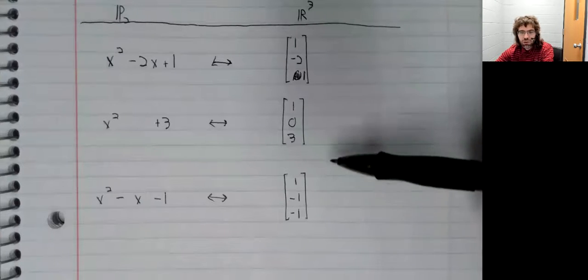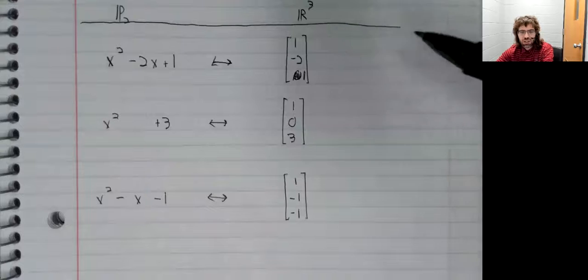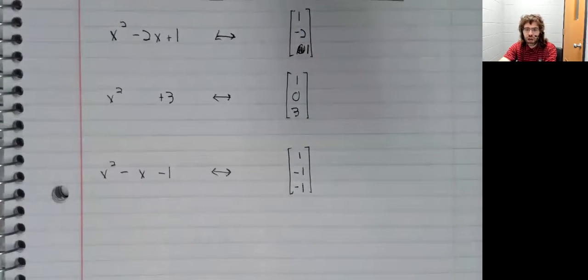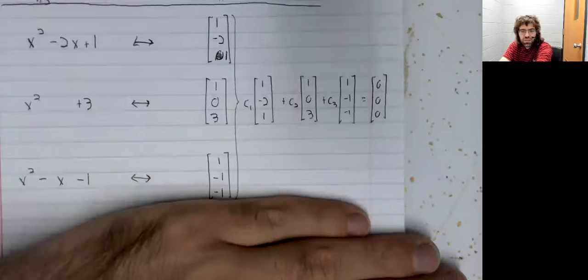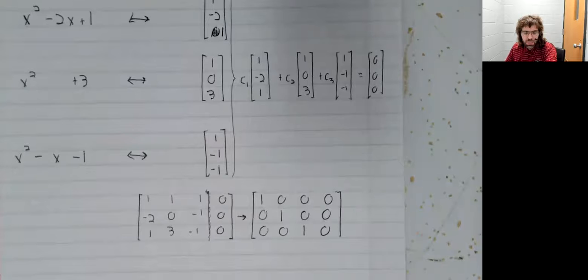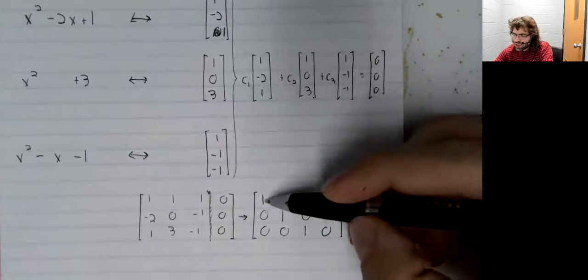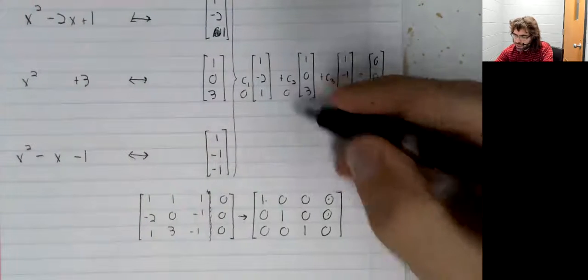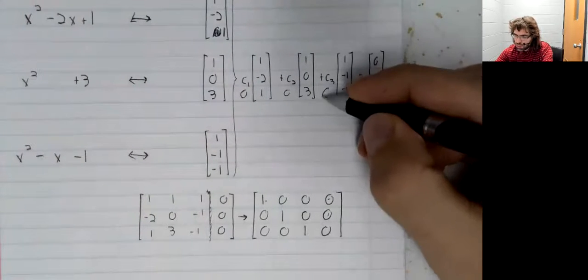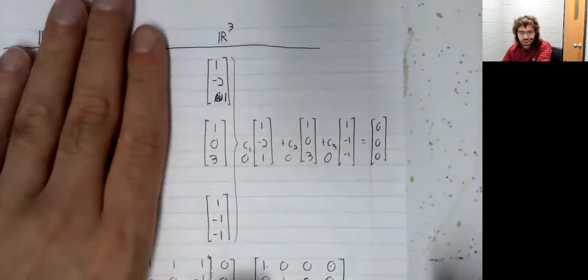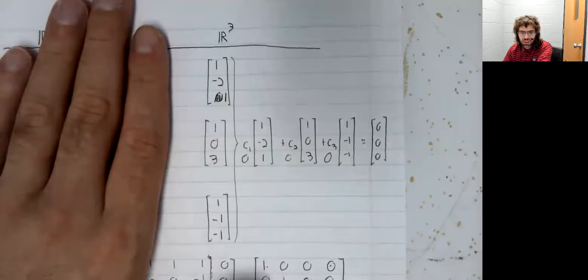And we know how to determine whether vectors in R3 are dependent or not. We set up the vector equation and we solve it using Gauss-Jordan elimination. And we see C1 equals zero, C2 equals zero, C3 equals zero. We only have the trivial solution. This set of vectors is linearly independent.